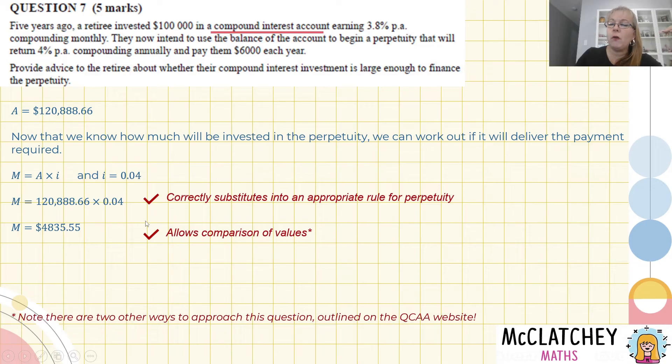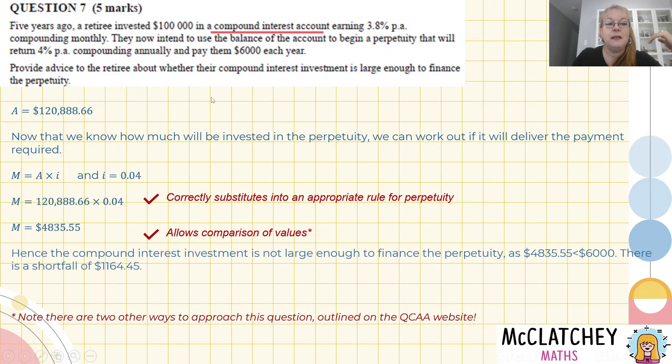This is why communication is so important, explaining your steps of working. Now here, I've actually worked out it's not going to work and now is where I'm up to providing the advice. So what I'm going to say is the compound interest investment is not large enough to finance the perpetuity because $4,835.55 is less than $6,000. And there's a shortfall of $1,164.45. That explanation there is enough to give me that final mark, determining if the compound interest investment is enough to finance the perpetuity.